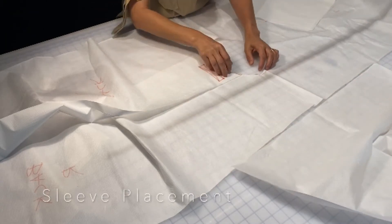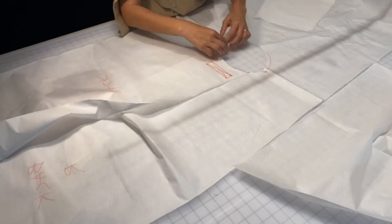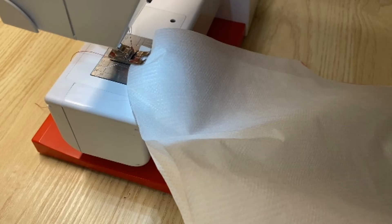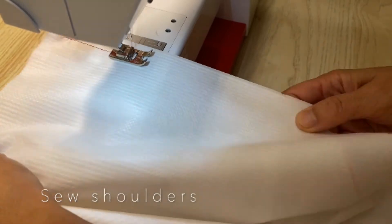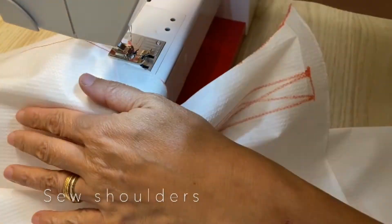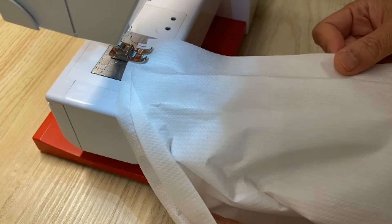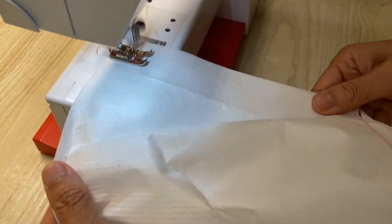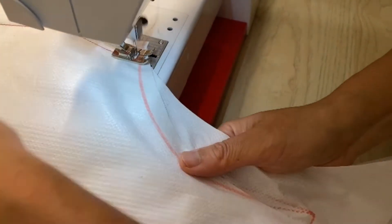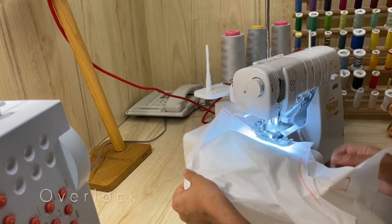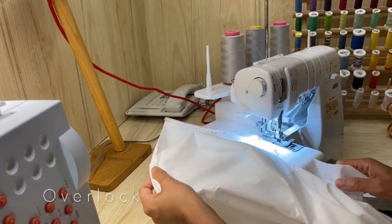Now we're just making sure that our sleeves are going to be placed properly. And we're going to sew the shoulders. We're going to do a straight stitch on both shoulder seams, and then we'll also finish that off with an overlock stitch so you have a little bit more stability.